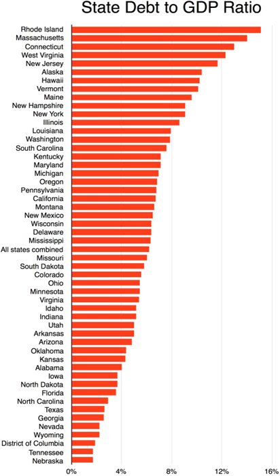California created agencies — also called superagencies by government insiders — to distinguish them from the general usage of the term agency. Kentucky created cabinets, Massachusetts created executive offices, and Vermont created agencies.